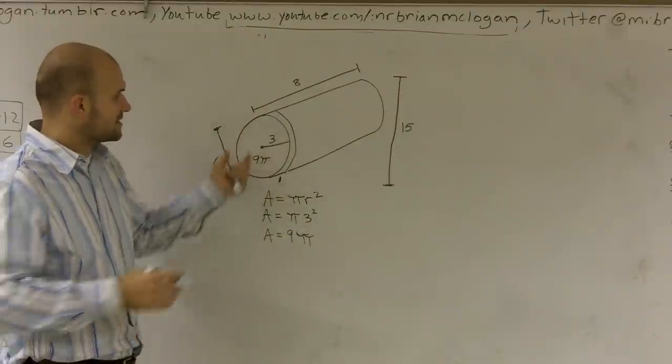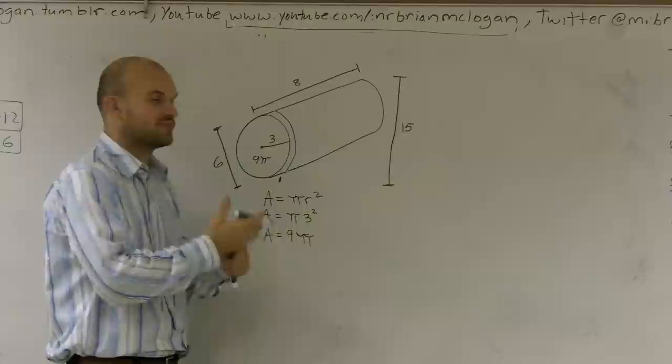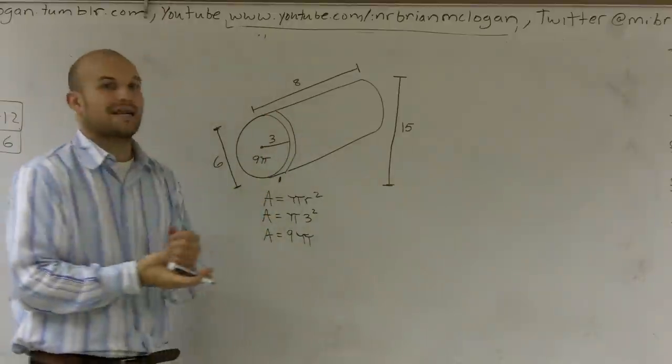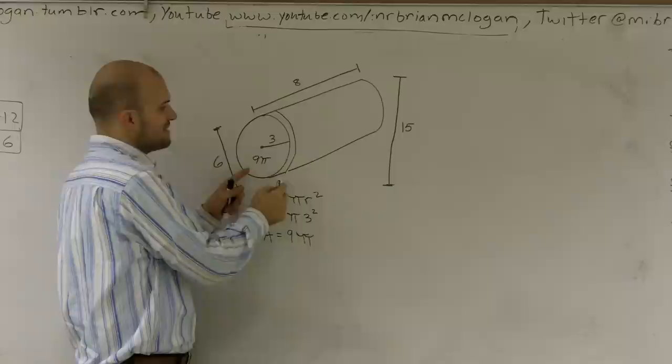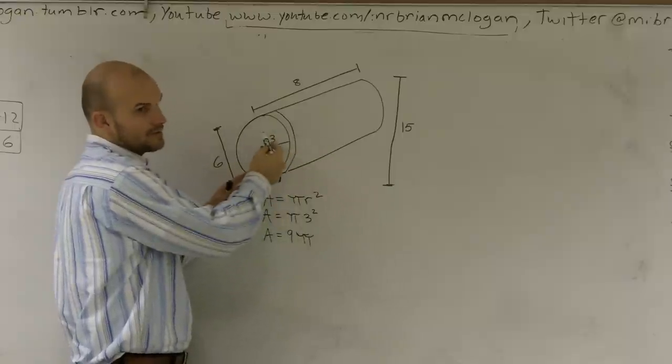this whole little kind of thing of it as like a slice, kind of like sliced bread or this could be like salami or something like that. You're slicing this off. 9 pi times 1 is going to give you 9 pi.